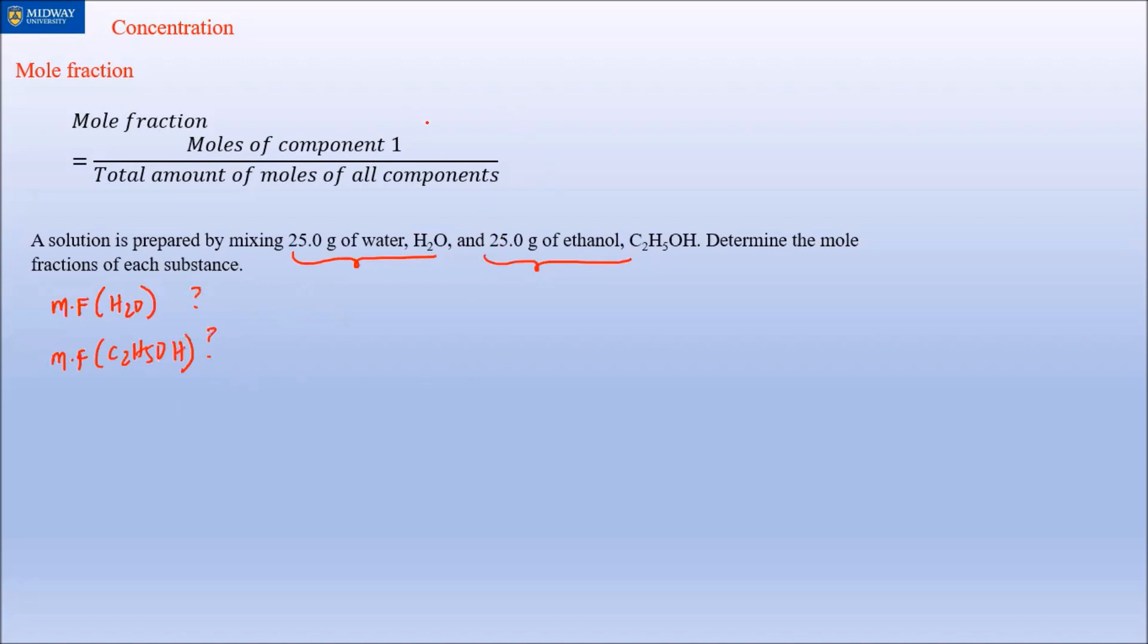What's the molar mass of water? That's easy, it's 18 grams over one mole. Ethanol, if you do the math, will be 2 times 12 is 24, plus 6 is 30, plus 16 is 46 grams over one mole.